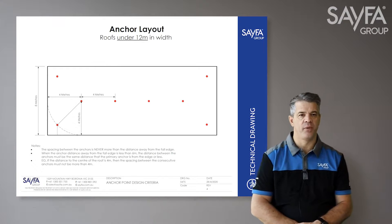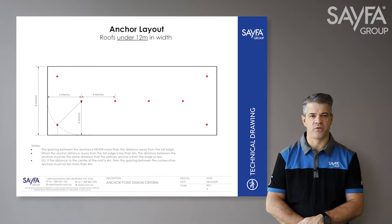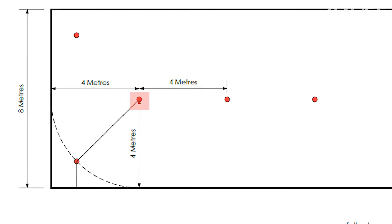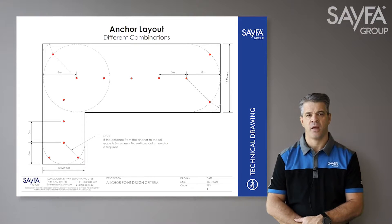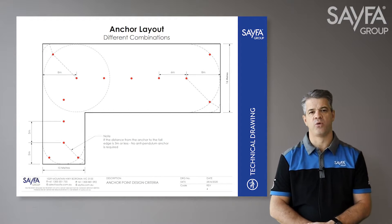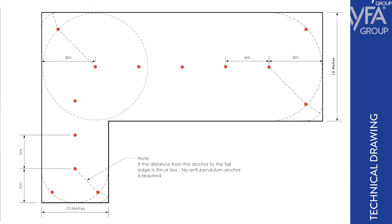For smaller roofs less than 12 meters in width on Category One roofs, where the pitch is under 15 degrees and fall protection is required only at the danger perimeter edges, the primary anchor will need to be located in the center of the roof with equal distance off each edge to ensure no pendulum fall is set up. Consecutive anchors are positioned down the center of the roof, spaced no more than the distance away from the fall edge. For bearing-shaped roofs, the anchors need to be set out according to the width of each independent roof area, maintaining correct primary anchor position and spacing to prevent a pendulum fall.